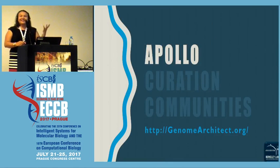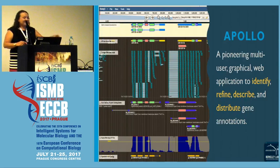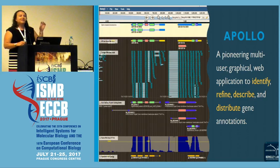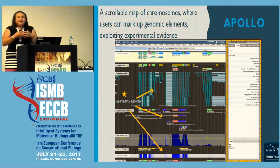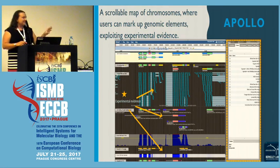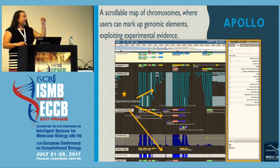To talk about Apollo curation communities, I also need to explain a little bit about Apollo. We call it a pioneering multi-user graphical web application. It allows users to look at gene structures — this is a predicted gene in one of the predicted sets. Annotators can drag these structures and edit them according to experimental evidence available. It's basically a scrollable map of the chromosomes of the genome, and it allows you to mark up specific areas according to experimental data such as reads from RNA-seq experiments or aligned gene models from other species. Curators can go and look at these structures and modify them according to what the data says.